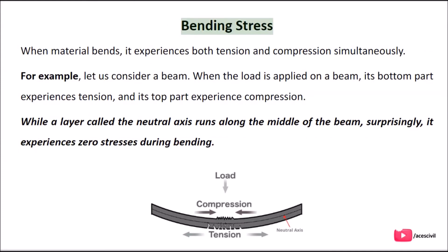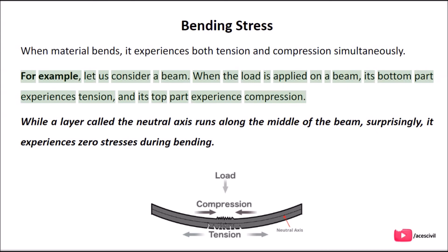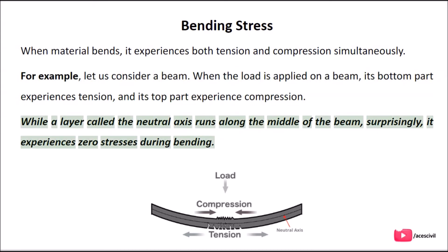Bending stress: when a material bends, it experiences both tension and compression simultaneously. For example, consider a beam — when a load is applied on a beam, its bottom part experiences tension and its top part experiences compression. A layer called the neutral axis runs along the middle of the beam, and it experiences zero stress during bending.